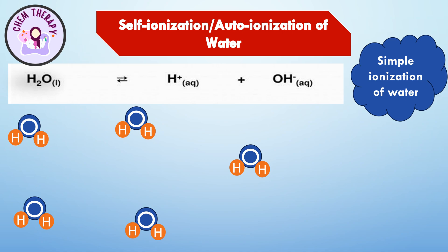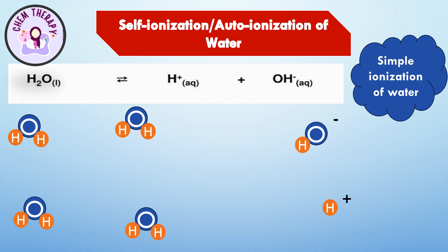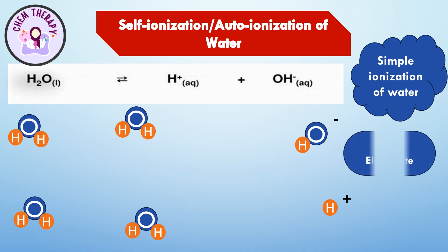Not every collision results in ionization, so most of the water remains in the form of H₂O molecules. Only a few water molecules get ionized into hydrogen ions and hydroxyl ions. The presence of these few ions makes water a weak electrolyte.